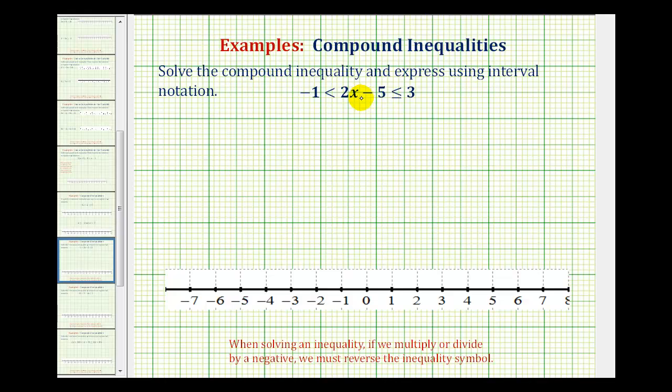Starting with the middle expression, we can read this from right to left: 2x - 5 must be greater than -1. And we can also read this from left to right. So we'd have 2x - 5 must also be less than or equal to 3.